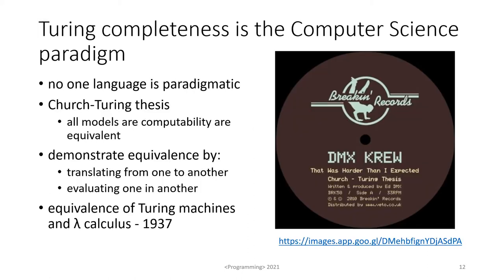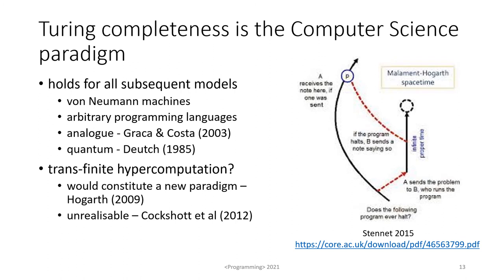So I reckon that Turing completeness is the computer science paradigm. There's no one language that's paradigmatic, but as a body of theory the Church-Turing thesis seems to rule. All models of computability are equivalent — you demonstrate equivalence by translating from one model to another, by writing a compiler or an interpreter. Church and Turing showed the equivalence of Turing machines and lambda calculus back in 1930, and it's held for all subsequent models including von Neumann machines and arbitrary programming languages. As for analog computing, Racker and Costa showed it's Turing complete; quantum computing — Deutsche showed that's Turing complete too.